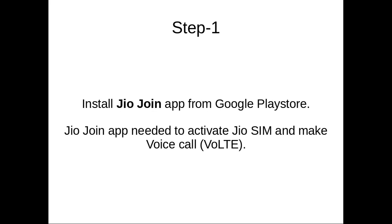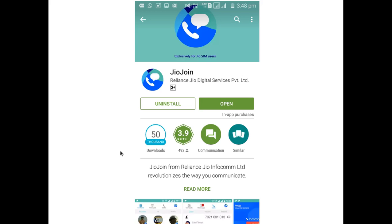Step 1. First we need to install the Jio Join app from the Google Play Store. This Jio Join app is needed to activate your Jio SIM and make voice calls. You can download and install it from the Google Play Store.